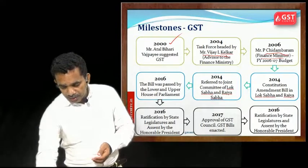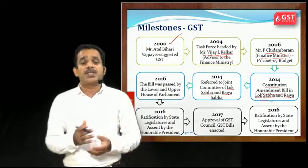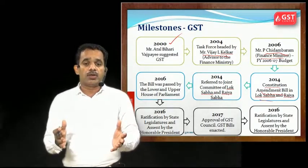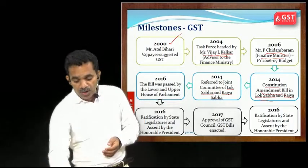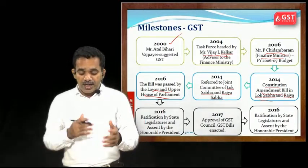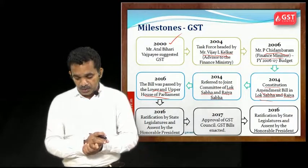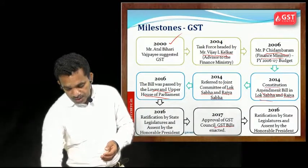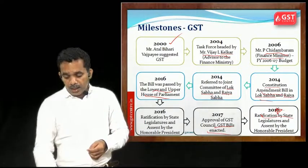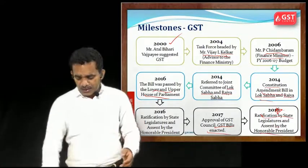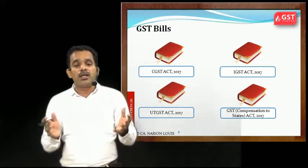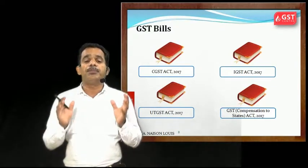In 2014, the Constitution Amendment Bill was presented in Lok Sabha and Rajya Sabha, and was referred to a joint committee to study GST. In 2016, the bill was passed by both the lower and upper houses of Parliament. Also in 2016, ratification by state legislatures and assent by the President was done. In 2017, approval by the GST Council and enactment of the GST bills were completed.